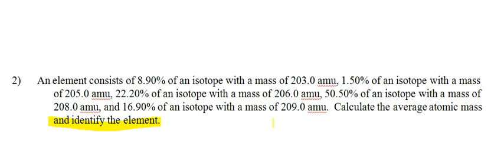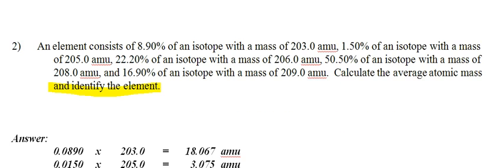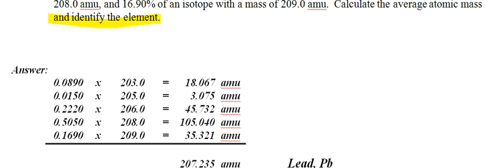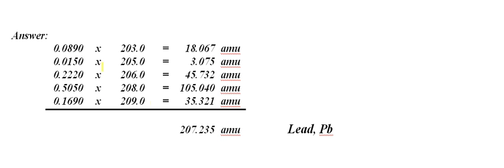Alright. So, again, you have all your percentages and all your AMUs. So, what I would hope that you would do is do the calculation. And again, there's more than one way to solve this problem. If you know of another way, that's fine. The average should turn out, or your final answer, should be somewhere between 203 and 209.